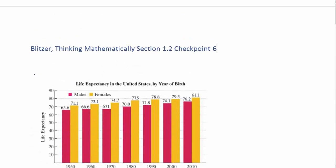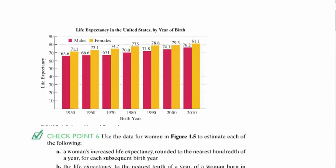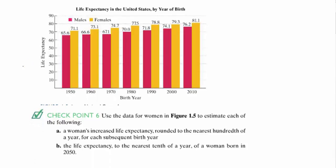Let's look at a quick video about Section 1.2, Checkpoint 6, talking about life expectancy. The bar graph we're looking at shows life expectancy in the United States by year of birth, divided into males and females, where males are in red and females are in yellow. We have the birth year along the x-axis and the life expectancy — how long we expect somebody to live — along the y-axis.